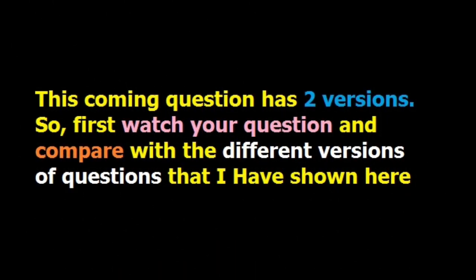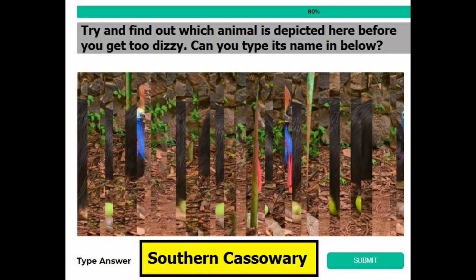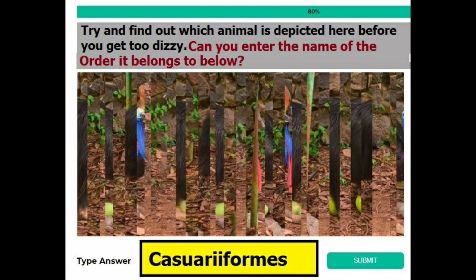The coming question has two versions, and each version differs from the other only in the last sentence. In version 1, the last sentence is 'can you type its name below?' and if you find this question, your answer is southern cassowary. For version 2, if the sentence reads 'can you enter the name of the order it belongs to below?' then your answer is cassowariformes.